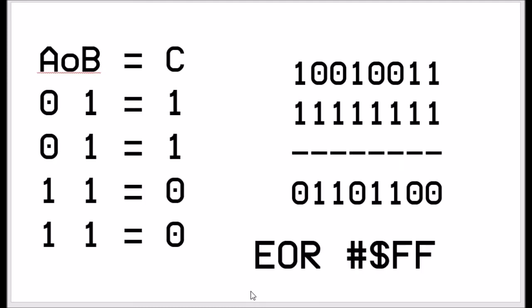If you exclusive OR with 255 — which means all the bits are 1 — you'll find it basically reverses the input. So if this is the input and this is our mask: 0 XOR 1 equals 1, 0 XOR 1 equals 1, 1 XOR 1 equals 0, 1 XOR 1 equals 0. Effectively our output is the reverse of our input. This is how it would perform in the 6502 — we're exclusive ORing with FF, which is 255 and all bits set to 1, so the answer is actually the opposite of what we put in. Even though exclusive OR does a completely different thing, because of the number we put in, we can make it perform a NOT.